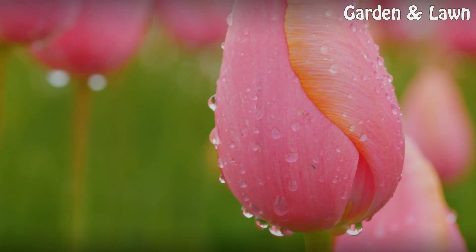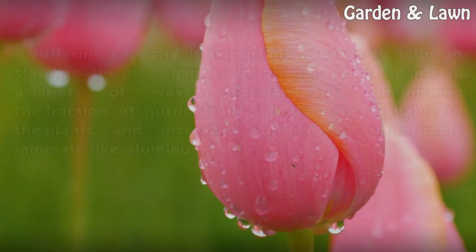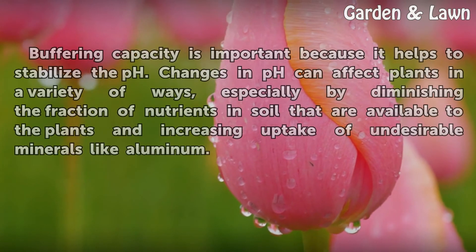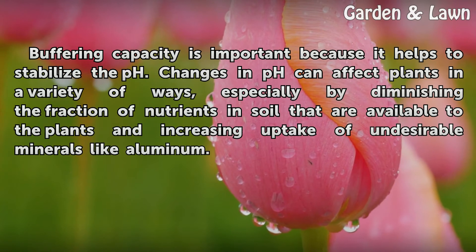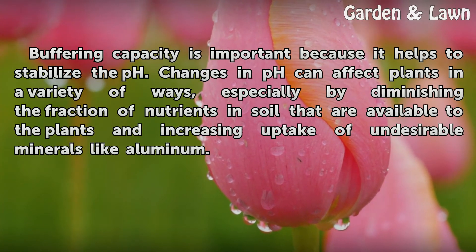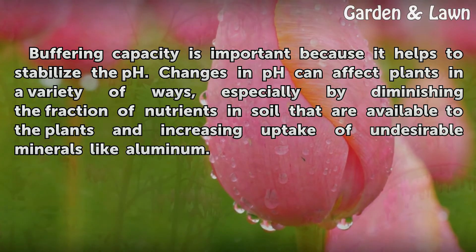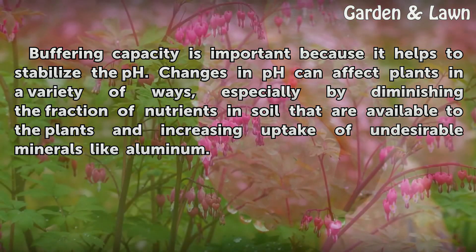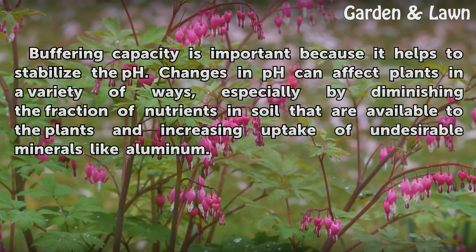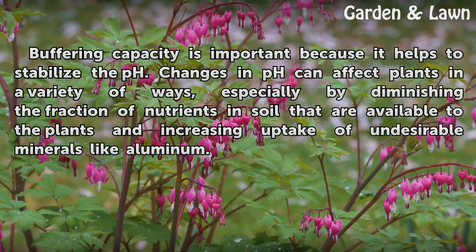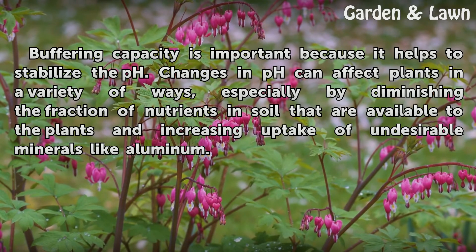Significance. Buffering capacity is important because it helps to stabilize the pH. Changes in pH can affect plants in a variety of ways, especially by diminishing the fraction of nutrients in soil that are available to the plants and increasing uptake of undesirable minerals like aluminum.